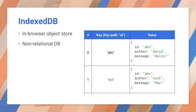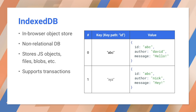IndexedDB is a scalable NoSQL object store built into the browser. It allows you to store just about anything of any JavaScript data type in the user's browser. In addition to the usual create, read, update, and delete actions, IndexedDB also supports transactions and indexes. Because IndexedDB is not relational, it doesn't support complex queries. However, responses are very fast.